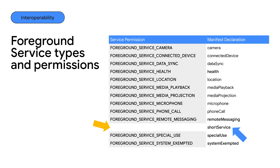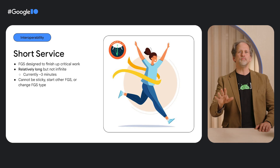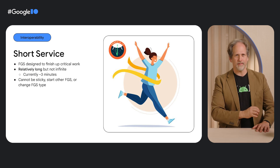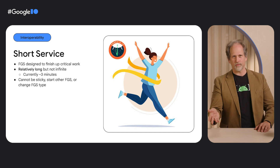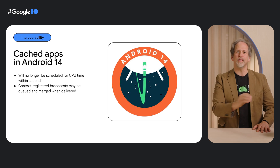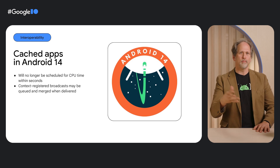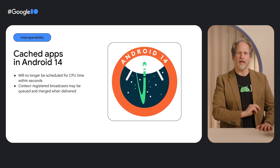Short service is a new type of foreground service from Android 14 that only requires the core foreground service permissions. It's for those times when you have to do something relatively short-lived and critical that doesn't match the foreground service criteria, giving your app a much better chance of completing critical tasks before its task is killed or placed into a cached state. A cached state occurs after your app no longer has an active Android component such as an activity, job, or service. Also in Android 14, once your app is moved into a cached state, within seconds it won't get CPU time, and any broadcasts that it has dynamically registered for may be queued and/or merged when delivered. This is how things already work on some devices out there, but now it's standard platform behavior.